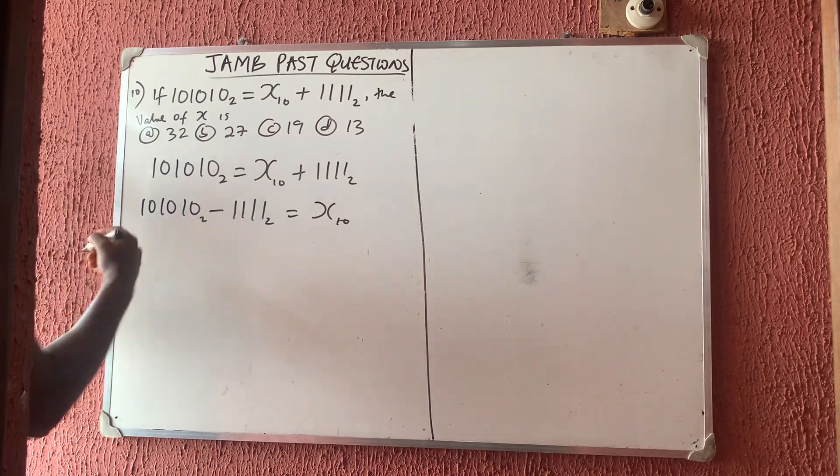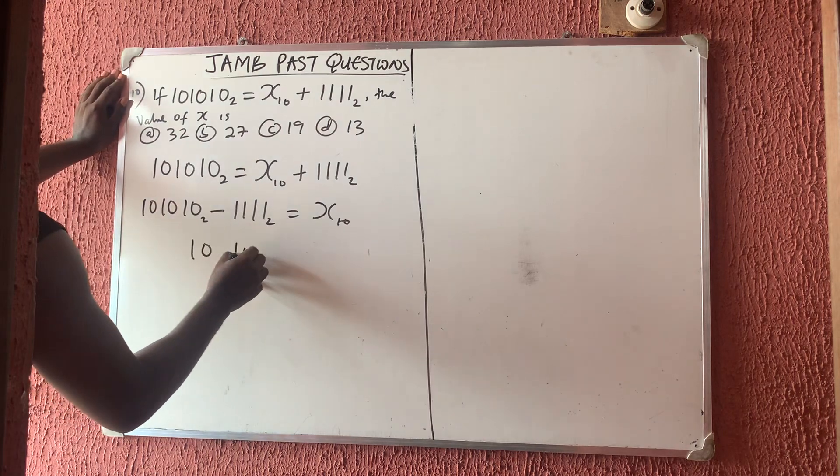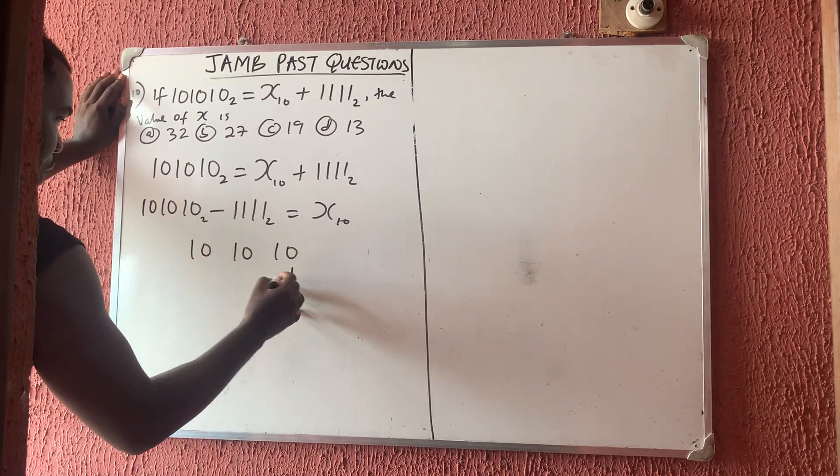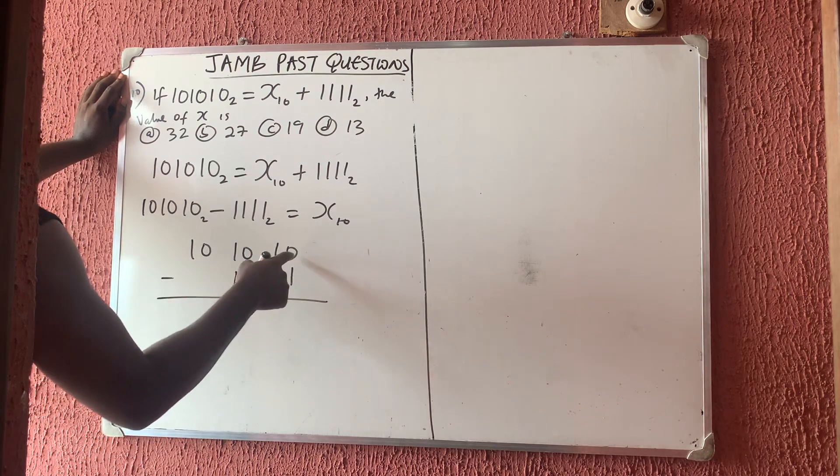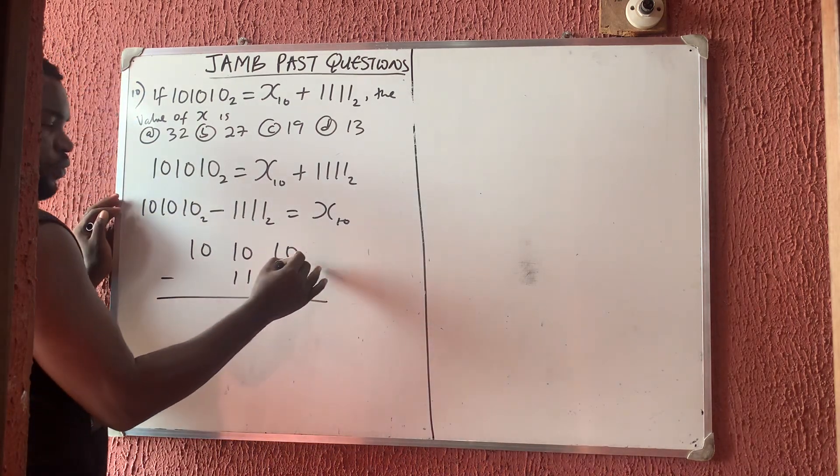So let me find this first. 101010 minus 1111. Let us do that subtraction. This minus this cannot go. Don't forget they are in base 2.